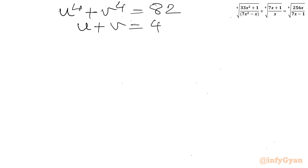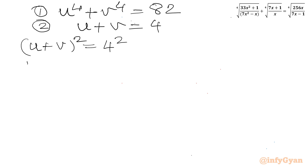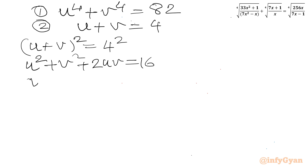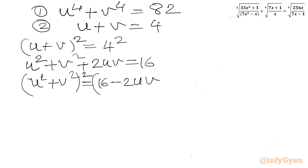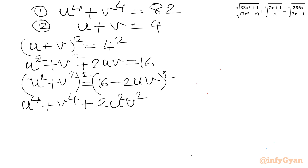Now I will consider squaring equation 1. So (u plus v) squared gives u squared plus v squared plus 2uv equals 16, meaning u squared plus v squared equals 16 minus 2uv. Squaring again: u⁴ plus v⁴ plus 2u²v² equals (u² plus v²) squared, which expands to (16 minus 2uv) squared, giving 256 minus 64uv plus 4u²v².